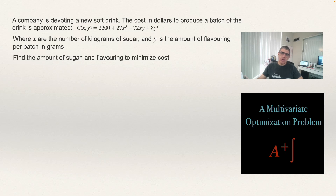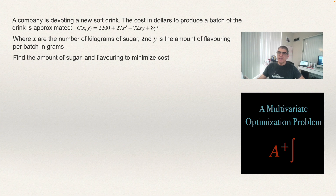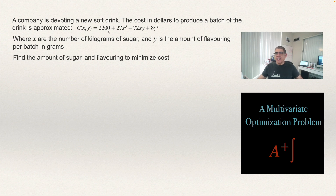In this video, I explain how to solve a multivariate optimization problem. In this problem, we have a cost function, and we need to find the value of X and Y. X is the amount of sugar in kilograms, and Y is the amount of flavoring per batch in grams. The cost is a function of these two — this is the cost that the company has for making this new soft drink. We want to know what amount of sugar and flavoring minimizes the cost.